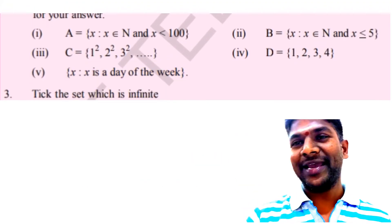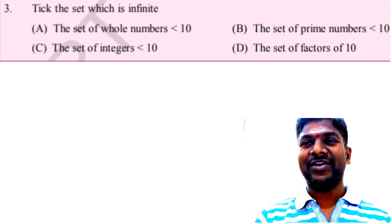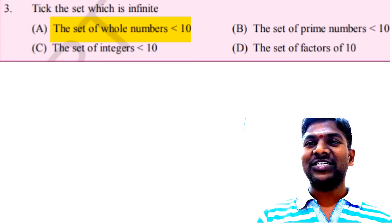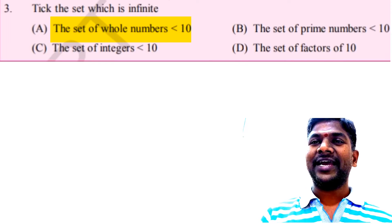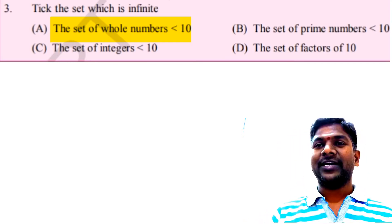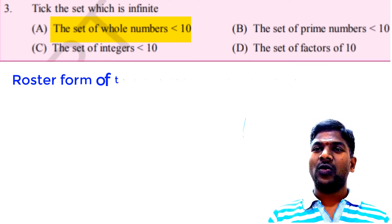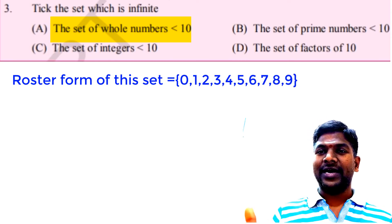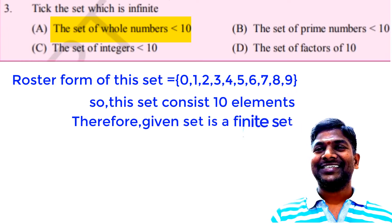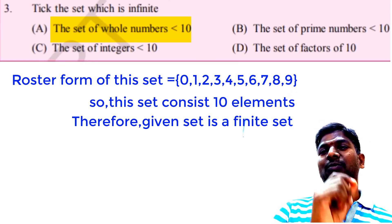Now for the next part of the 'Do This' exercise — tick the set which is infinite. Four questions are given. The first question: the set of whole numbers less than 10. The whole numbers less than 10 are: 0, 1, 2, 3, 4, 5, 6, 7, 8, 9 — totally 10 whole numbers. Since the number of elements is countable, it is a finite set. We cannot put a tick mark on this question.